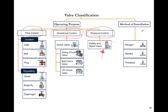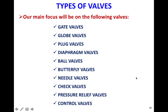Valves can also be categorized depending on the method of installation — whether they are flanged, connected with screws, welded, or threaded. The types of valves we will cover include gate valve, globe valve, plug valve, diaphragm valve, ball valve, butterfly valve, needle valve, check valve, and pressure relief and control valve.